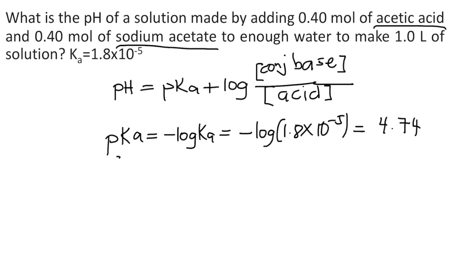Now let's solve for the concentration of our conjugate base. So how do you solve for concentration? Concentration is moles per liter. So in the problem, our conjugate base is acetate. We have 0.40 moles divided by 1.0 liters. So what is the concentration of our conjugate base? 0.40 molar.